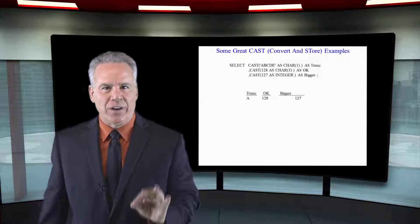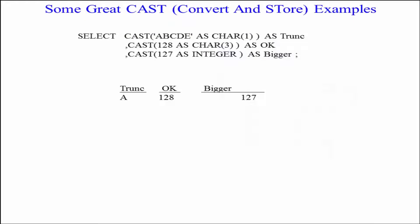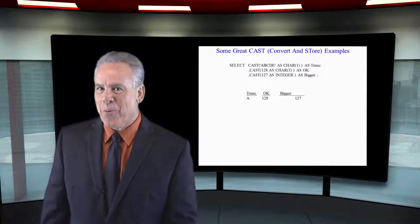I've given you some nice examples here. First of all, we're going to CAST ABCDE as a character 1. It's going to take those five characters, A, B, C, D, E, and say, well, okay, it's now just showing you the A because I've changed this to character 1.